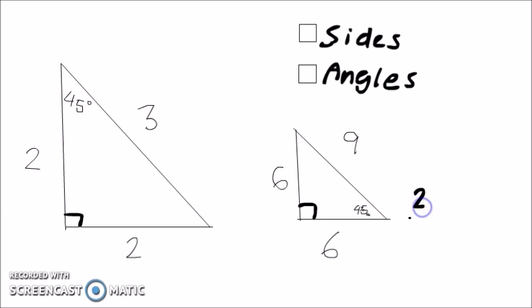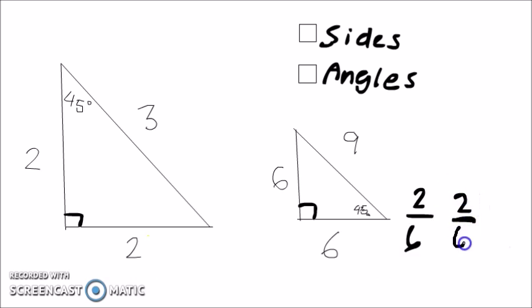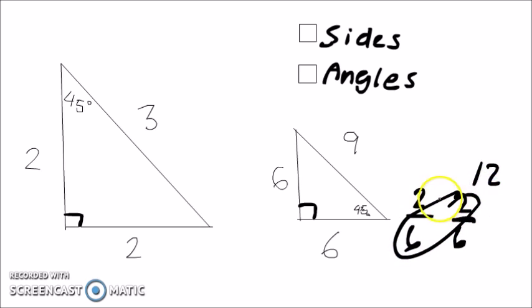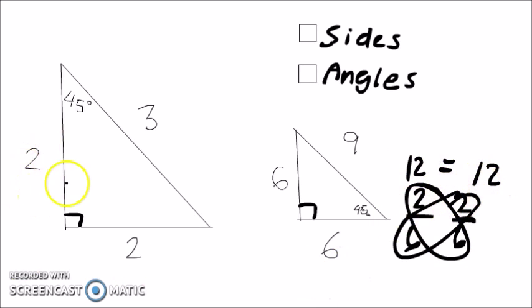So 2 divided by 6, and 2 divided by 6. 6 times 2 is 12, and 6 times 2 is 12, and 12 is equal to 12. So these sides are proportional.